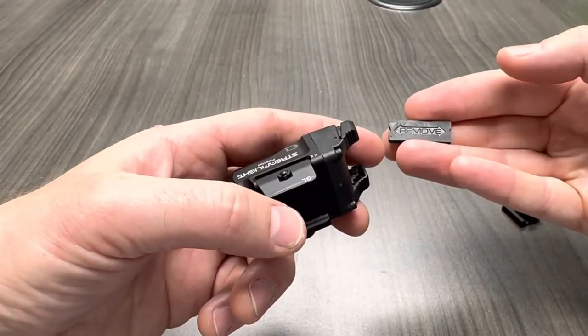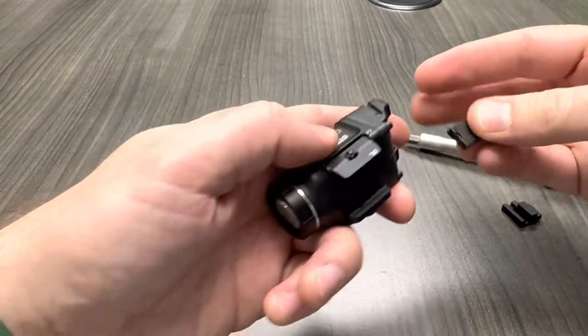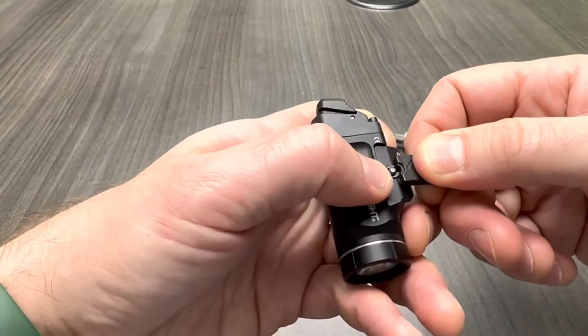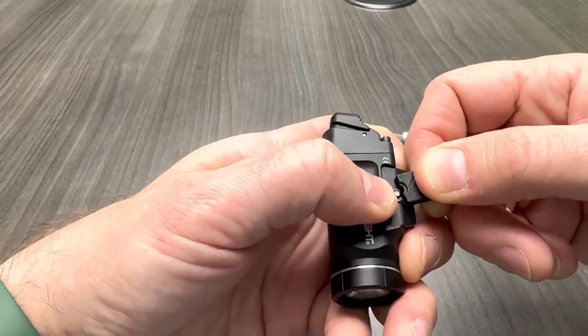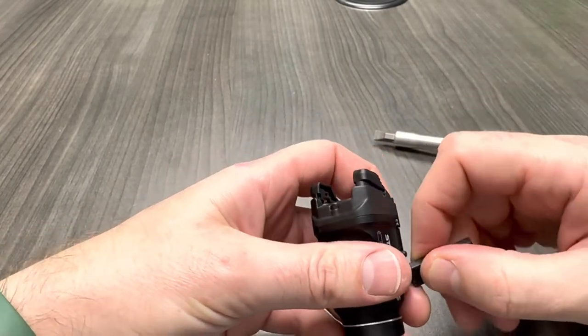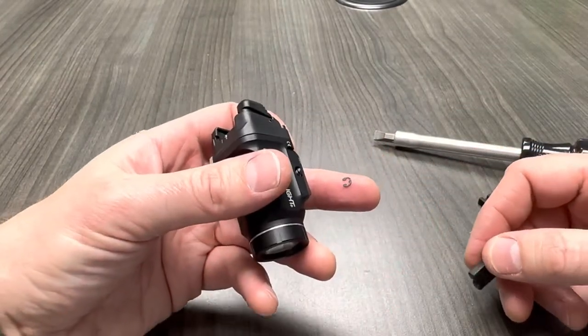Streamlight supplies a handy remove insert tool. You're going to use the remove side face down to press on that clip and pop it off the post, keeping a finger over it so that when it comes loose it doesn't go flying because it's a small little dude, easy to lose.